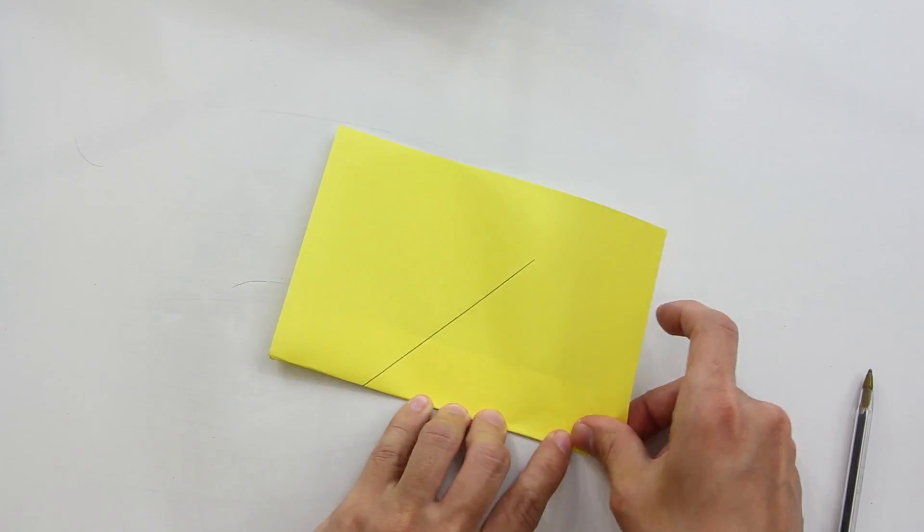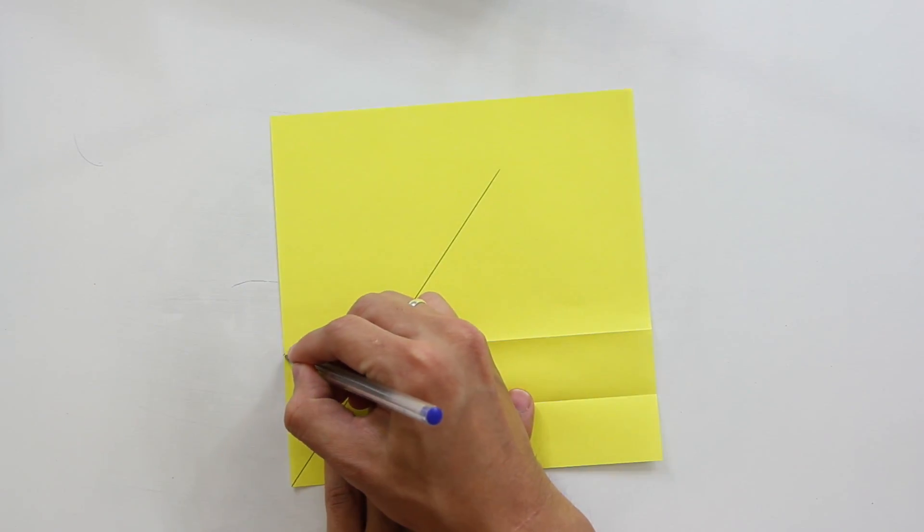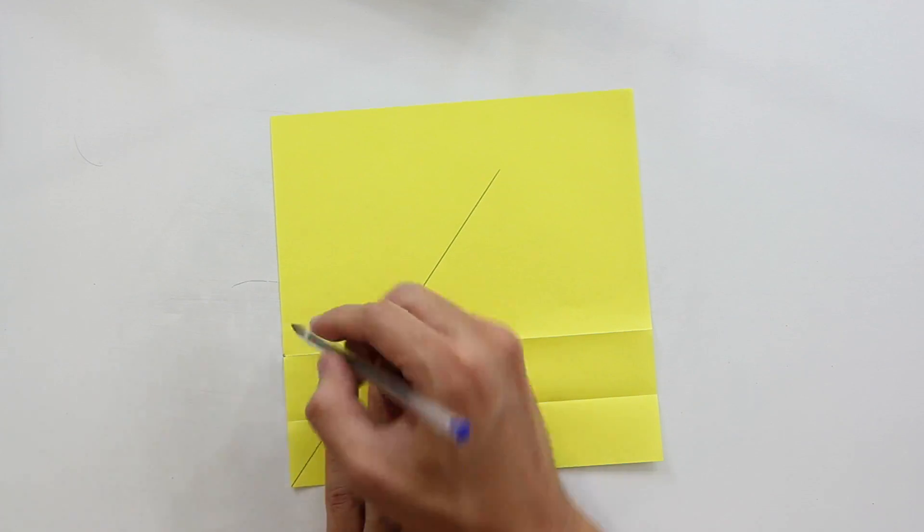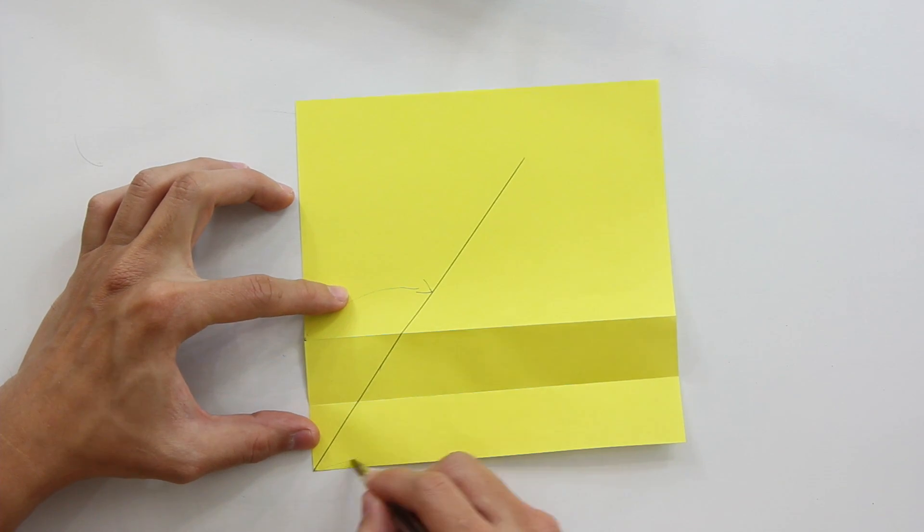Now make another parallel line with the same distance of the first fold. Now align this point here to this line and the edge of the paper with this other line here.